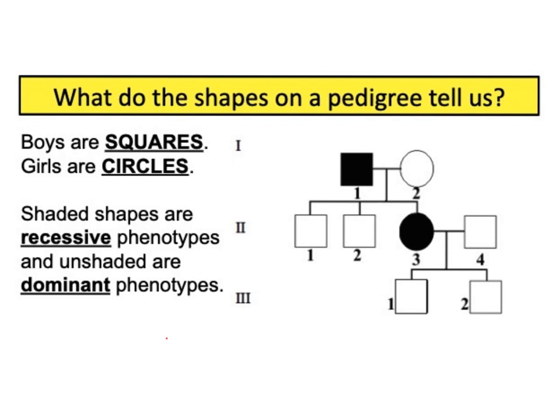In the video, we learned that the boys are squares. We can see six boys in this pedigree. Girls are circles. We have two girls. Most of the time, we have two phenotypes: the recessive phenotype and the dominant phenotype. We choose to shade in the recessive phenotypes, while the dominant phenotypes stay unshaded.